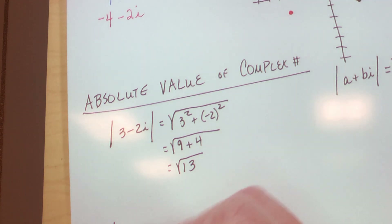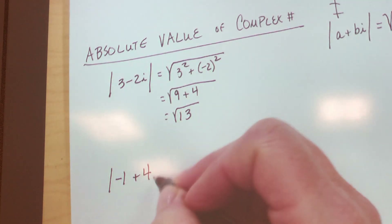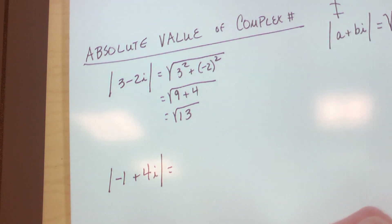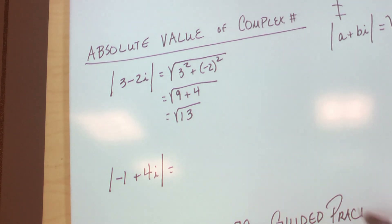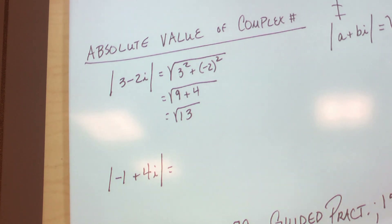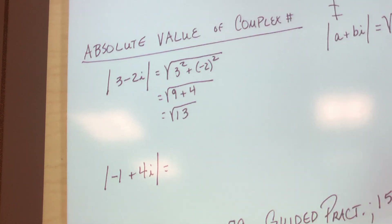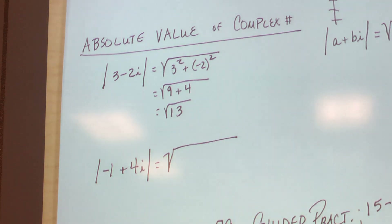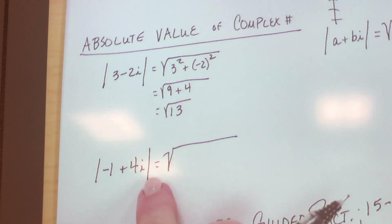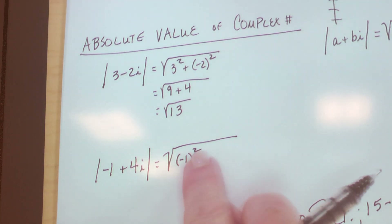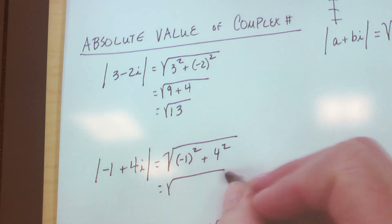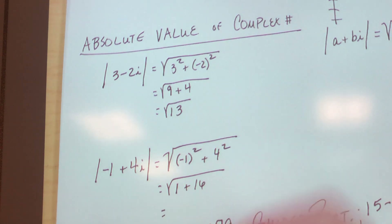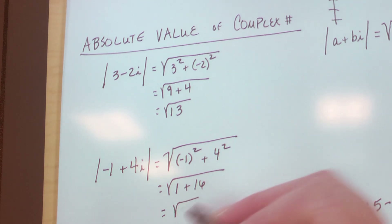You try this one: the absolute value of negative 1 plus 4i. The square root of a squared — that's negative 1 squared. If you square that negative and get a negative, shame on you. Plus b squared. What's negative 1 squared? 1. Plus what's 4 squared? 16. So the square root of 17. It's not always going to be a number you can't simplify — it just happened to work out that way for us.